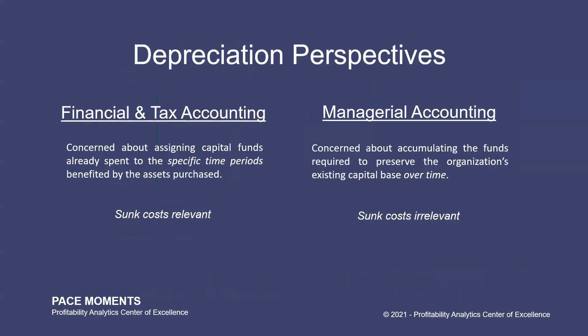First, we need to get a little perspective on how depreciation is looked at for financial and tax accounting versus managerial accounting. Financial and tax accounting is backward-looking. It's concerned about assigning capital funds already spent to the specific time periods benefited by the assets purchased. Its purpose is to measure past performance. Profit measurement is paramount, and things that have happened cannot be changed. In financial and tax accounting, sunk costs are relevant.